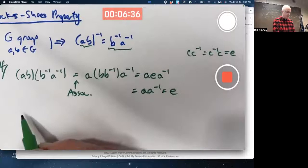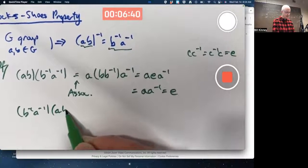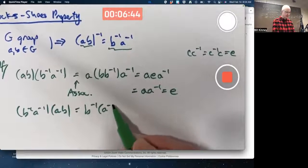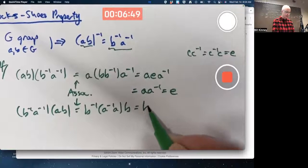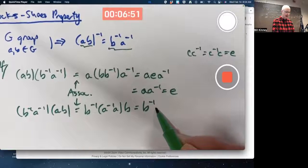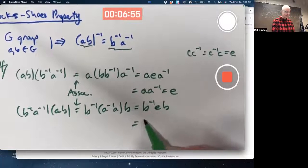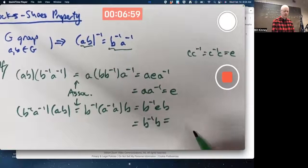And yes, it works the other way around, too. If I put the B inverse A inverse on the left instead of the right, it's very similar steps. Use the associative property again. A inverse times A is the identity E. B inverse times E is B inverse, and B inverse times B is E.